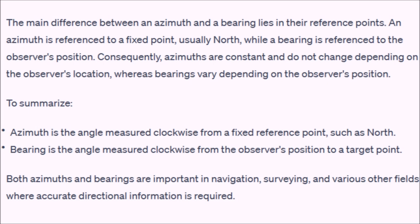ChatGPT said azimuth is the angle measured clockwise from a fixed reference point such as north, and bearing is the angle measured clockwise from the observer's position to a target point. That is obviously rubbish, because azimuths aren't taken from reference points and a bearing can be taken from anywhere to anywhere else. So much for AI.